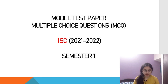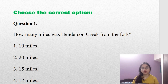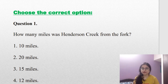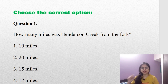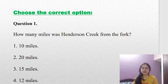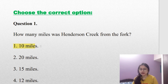Your questions will be from 'To Build a Fire.' Let's see the first question. Question number one: how many miles was Henderson Creek from the fork? Is it 10 miles, 20 miles, 15 miles, or 12 miles? The answer is 10 miles. You have nothing but to read this chapter very thoroughly, otherwise you will not be able to answer this question correctly.